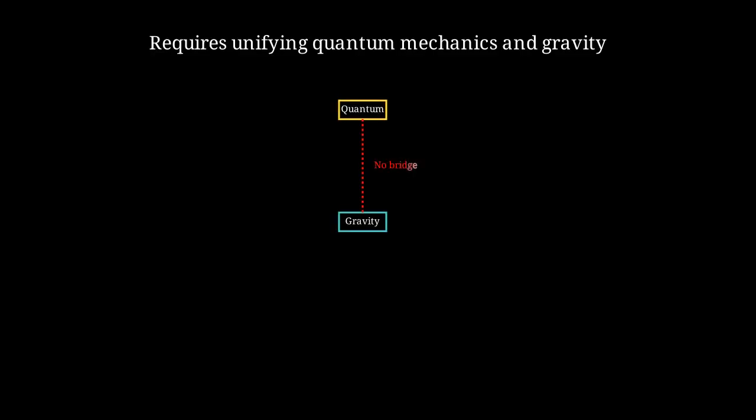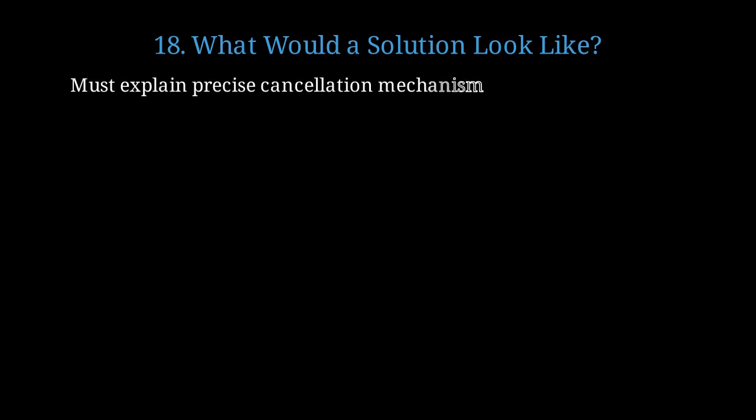We have no consistent theory that bridges quantum mechanics and gravity. The vacuum catastrophe lives right in this gap. What would a solution to the vacuum catastrophe actually look like?